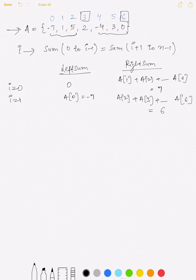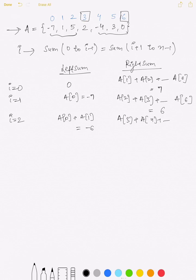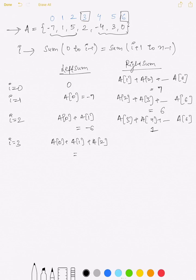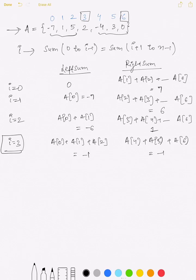For i equal to 2, the left sum would be a[0] plus a[1], which is -6, and the right sum would be the sum of elements from index 3 to 6, which is 1. For i equal to 3, the left sum is the sum of all elements from index 0 to 2, which is -1, and the right sum is the sum of elements from index 4 to 6, which is also -1. So at this index, the left sum is exactly equal to the right sum, meaning i=3 is our equilibrium index.